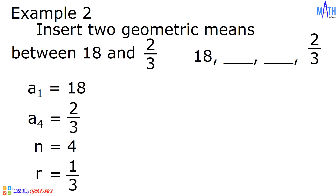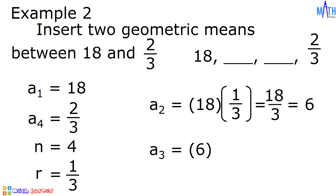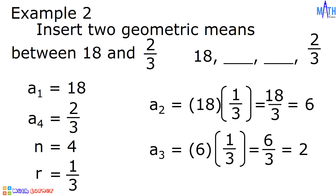After solving for the value of r, let us determine the two geometric means. To determine the second term, we multiply the first term and the common ratio: 18 times 1 third equals 18 thirds, or 18 divided by 3, which is equal to 6. To determine the third term, we multiply 6 and 1 third: 6 times 1 third equals 6 thirds, or 6 divided by 3, which is equal to 2. The two geometric means between 18 and 2 thirds are 6 and 2.